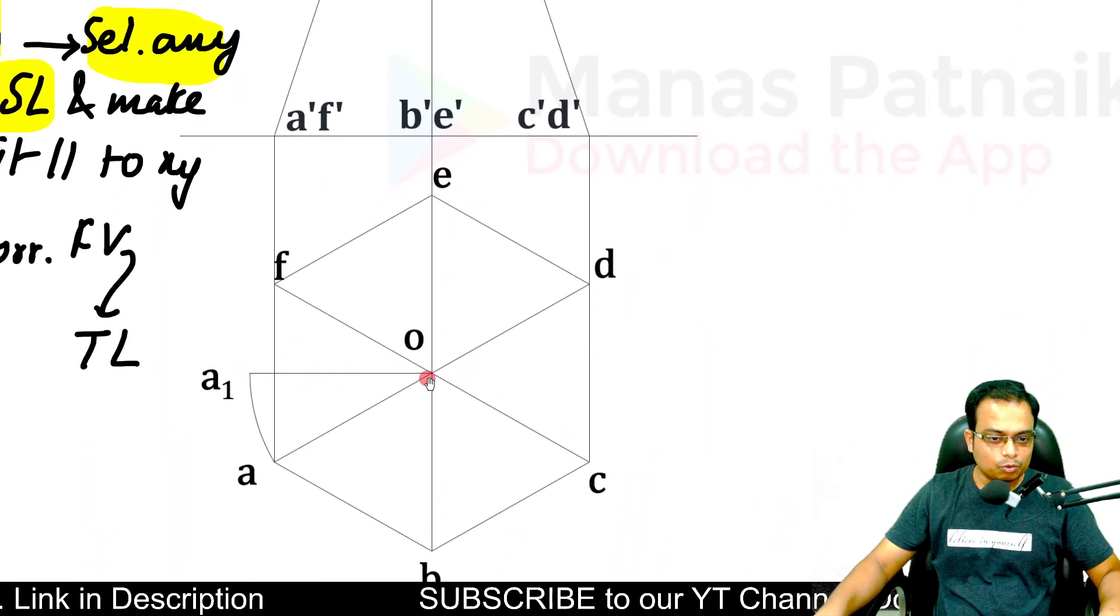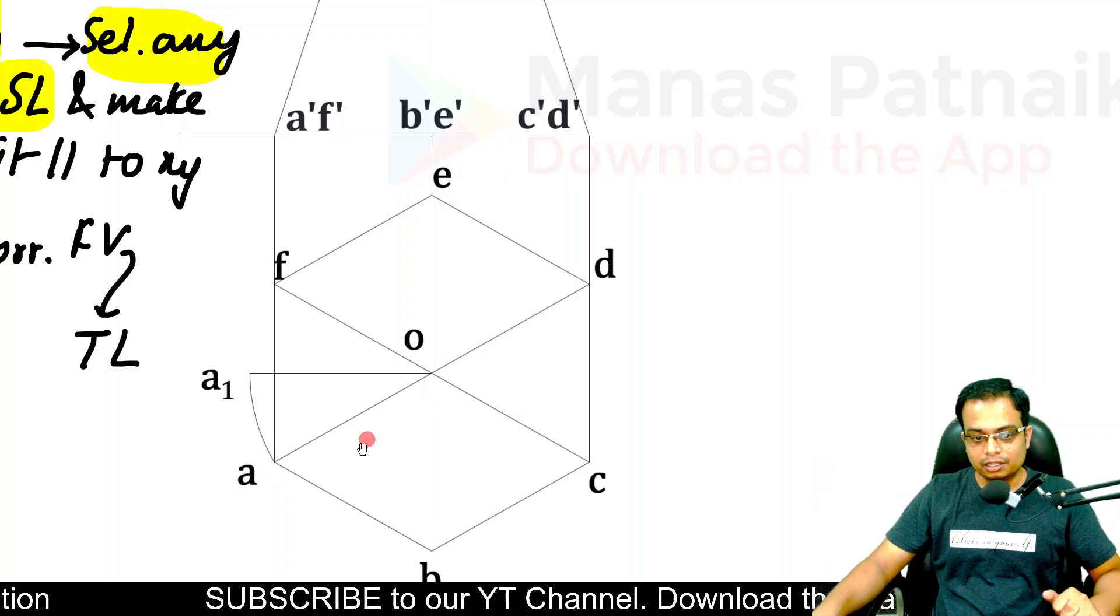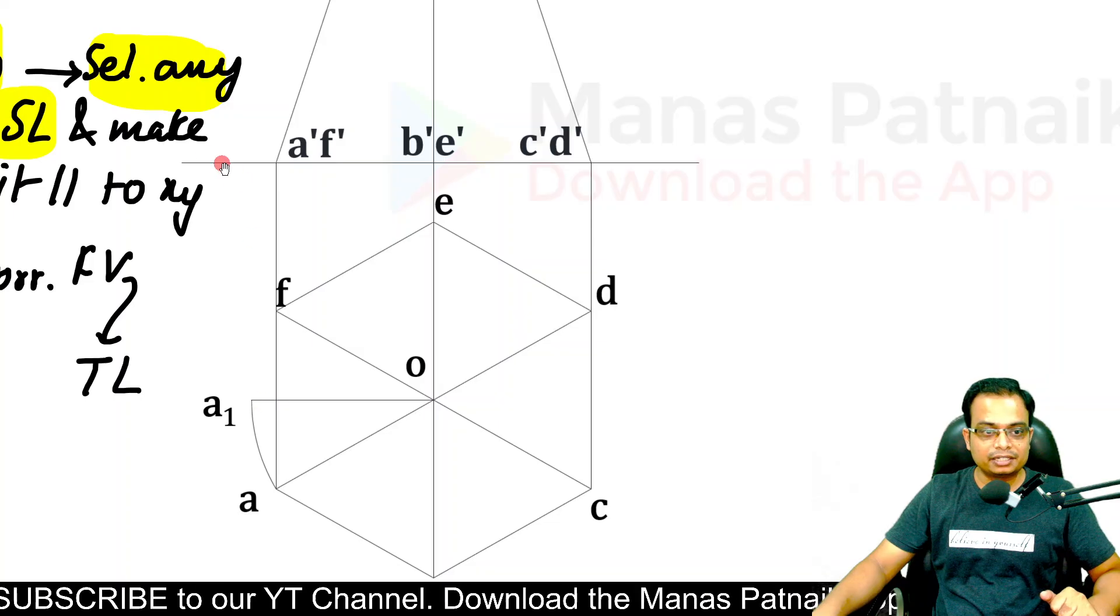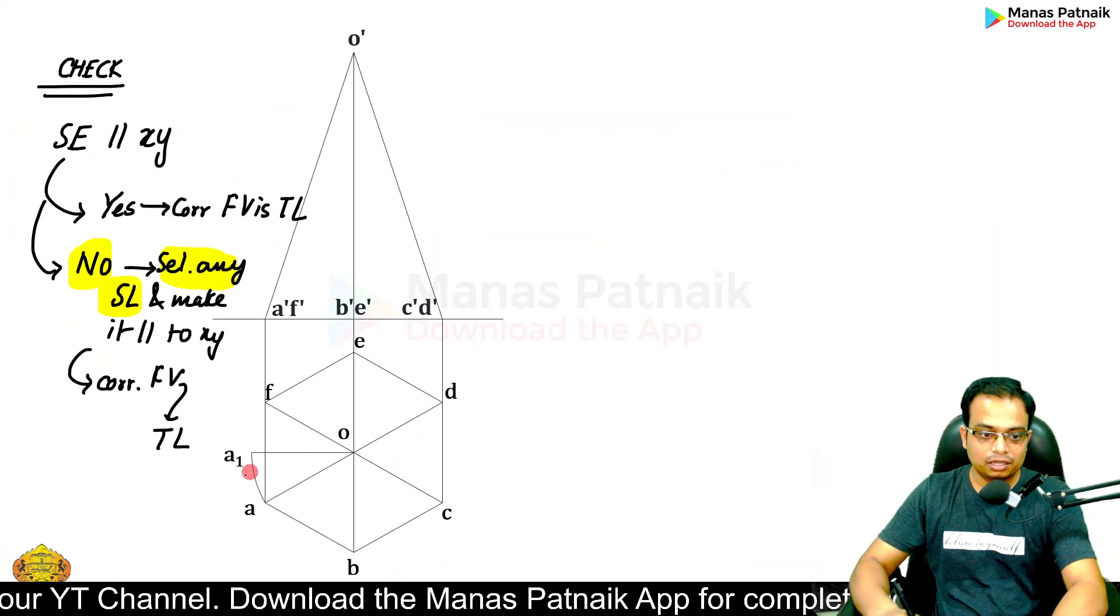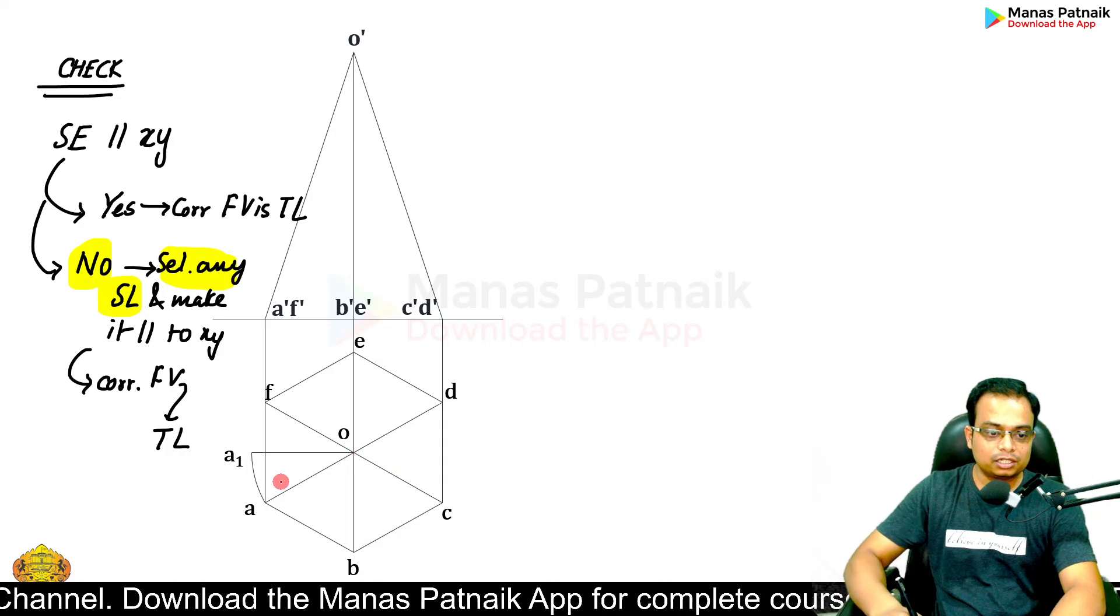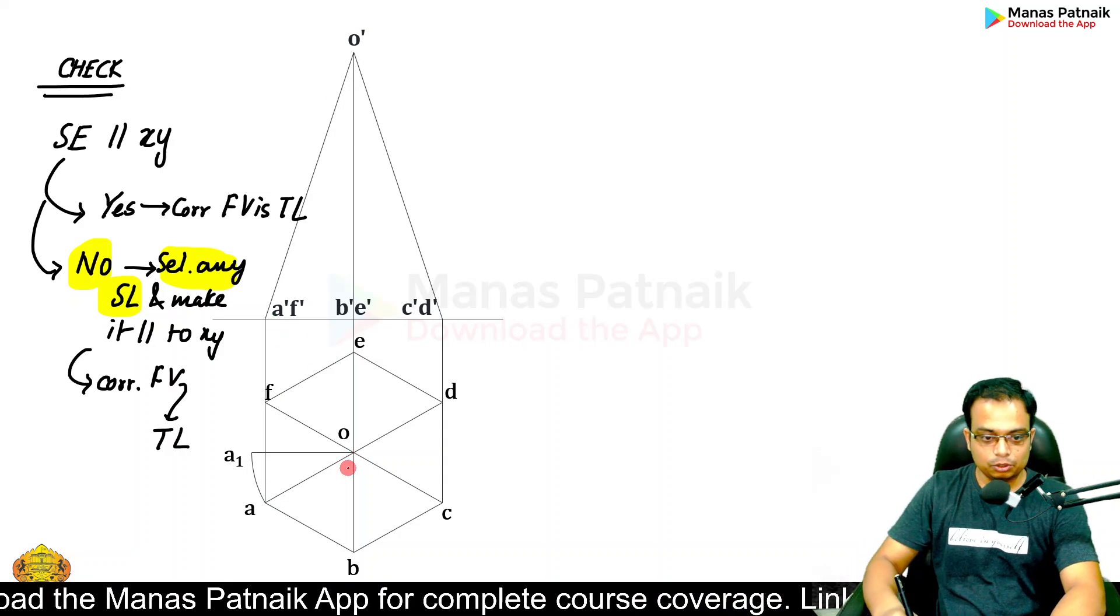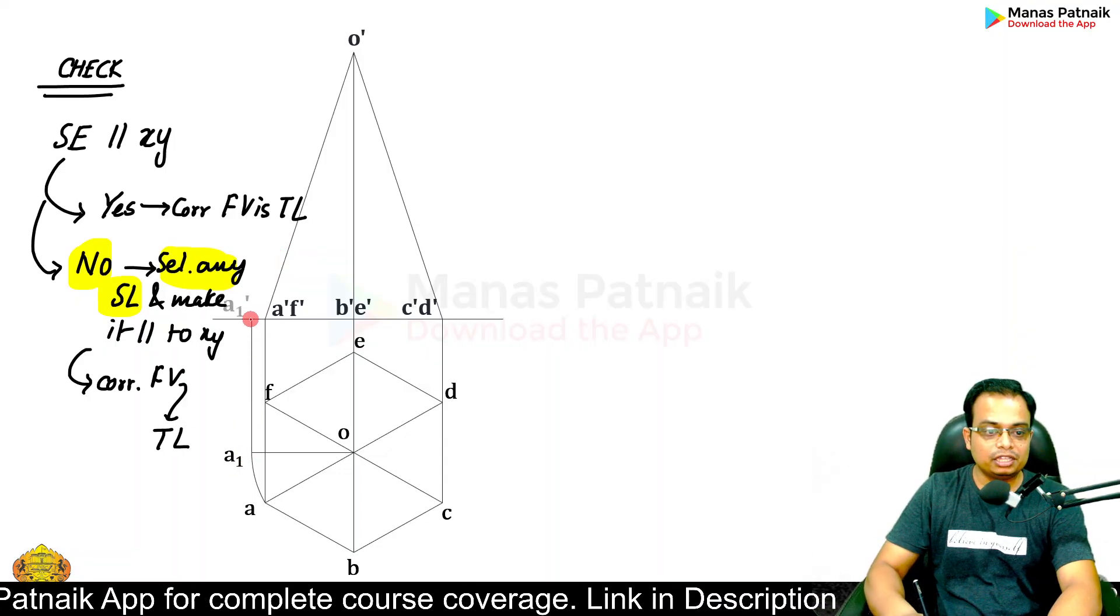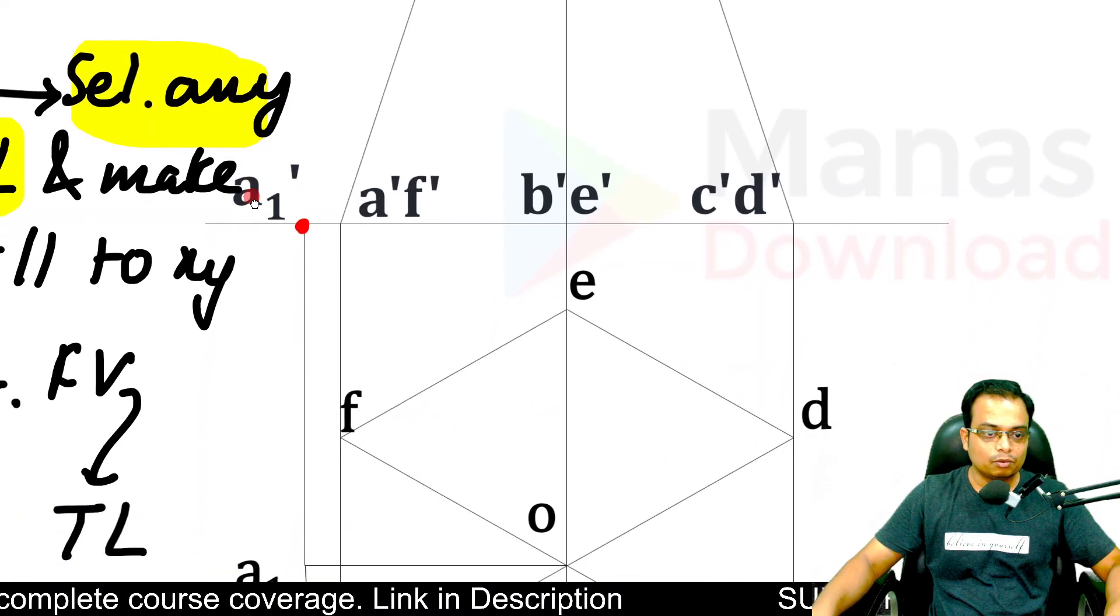This was the initial location or position of OA. We have rotated the solid in such a way that this OA has now become OA1, which indicates that it is parallel to XY. If you watch, this is the old stuff - the new stuff is O' and A1 is going to have a new location in the front view, this is A1'.